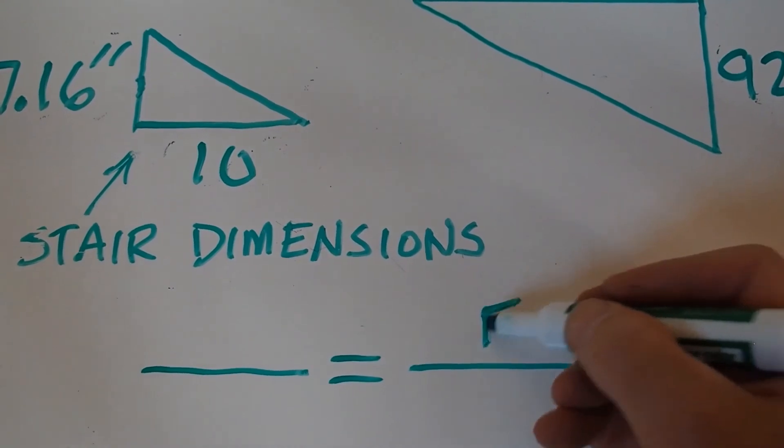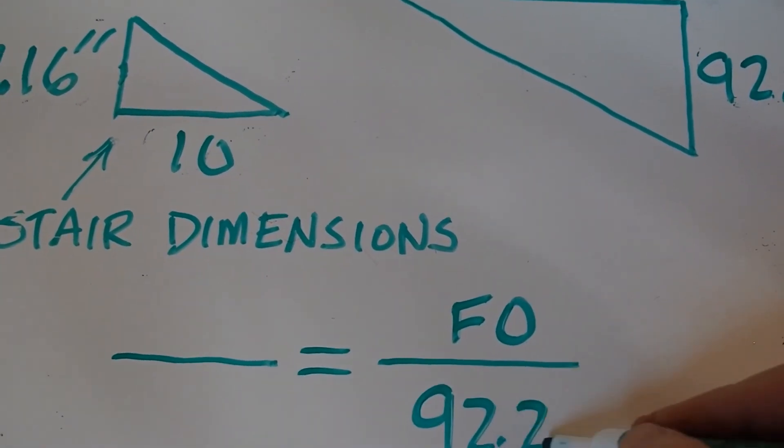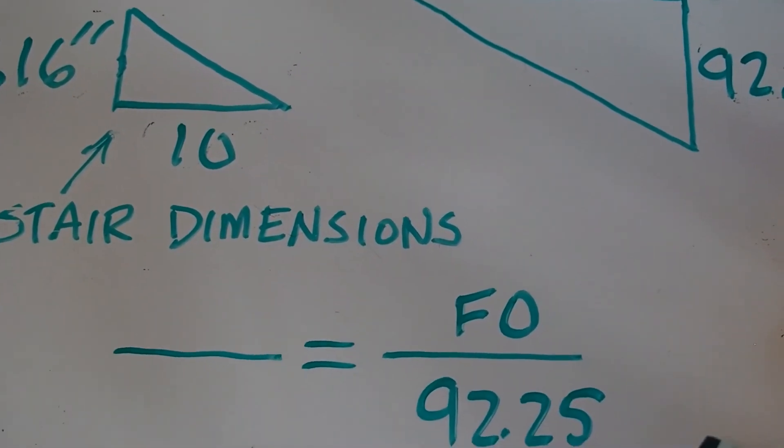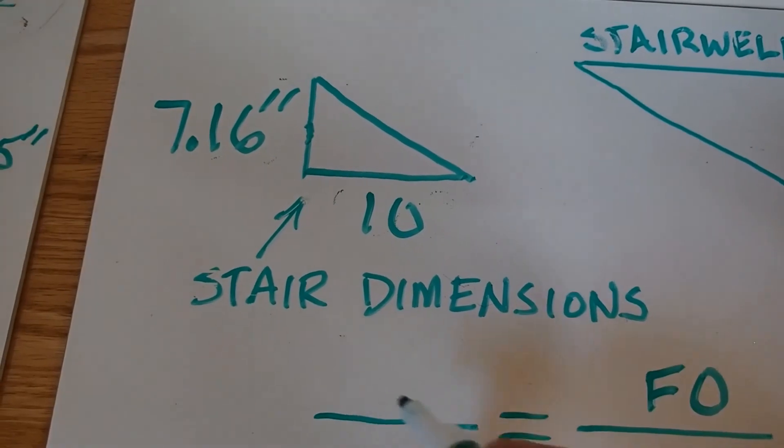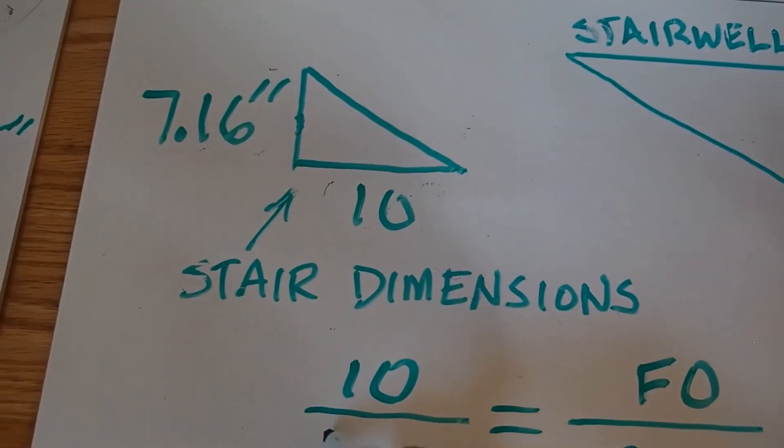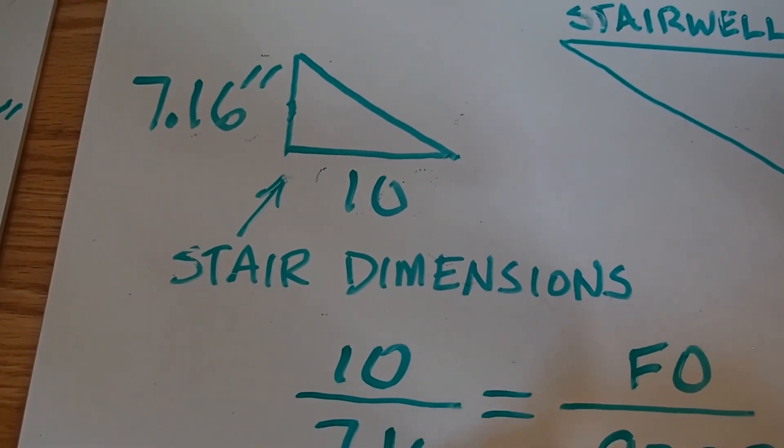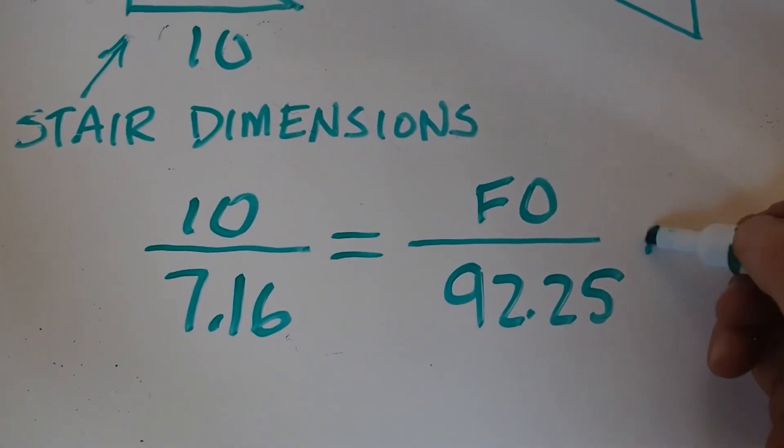I'm going to put the finished opening on the top, 92.25 on the bottom. And then over here, remember I've got the run on the top here, so I need to put the run on the top here: 10 and 7.16.